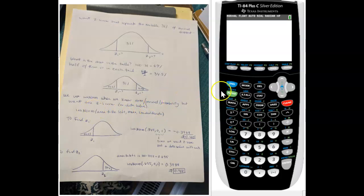So you go through and you find your invNorm by going second vars, which is our distributions, and you come down to invNorm. Then they have the area, the mean, standard deviation as your prompts. So my area to the left of this is point 345, because you make that percentage into a decimal.